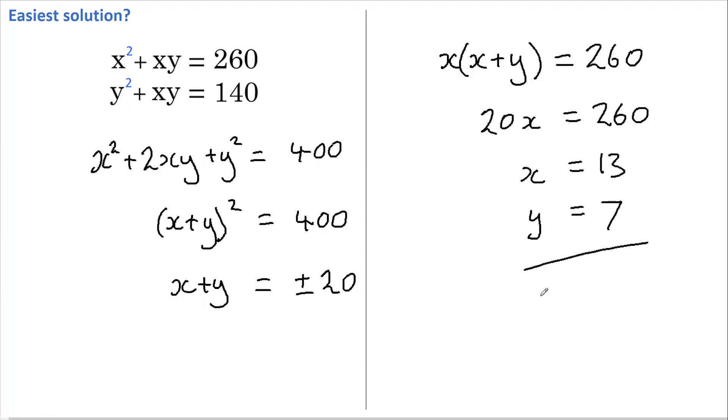And if x + y was to equal negative 20, then we just end up with x equals negative 13 and y equals negative 7. And there are our two answers.